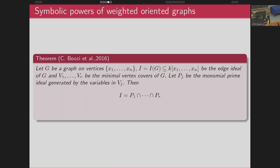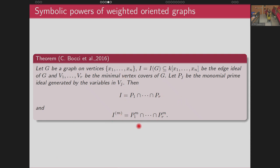Now we will give a simpler description of the symbolic powers. The description for ordinary graphs was already known. A theorem by Boshstein in 2016 proved that if I is the edge ideal and V1, V2, ..., Vr are the minimal vertex covers, then I can be written as an intersection of prime ideals corresponding to the minimal vertex covers. With this decomposition, the m-th symbolic power of I has the simpler expression as the intersection of the m-th powers of those primes.